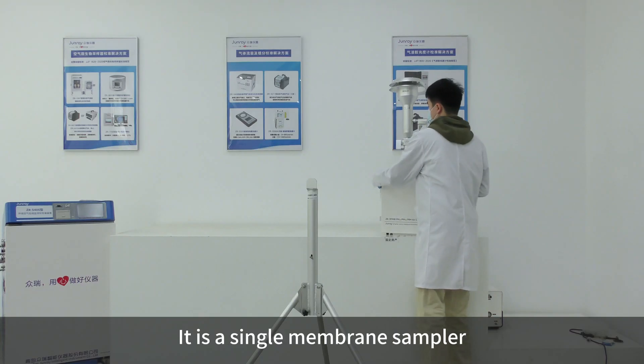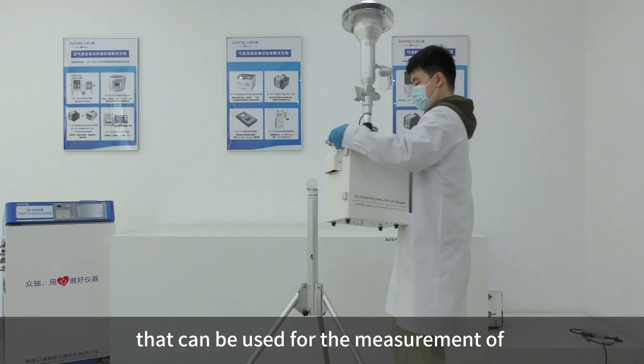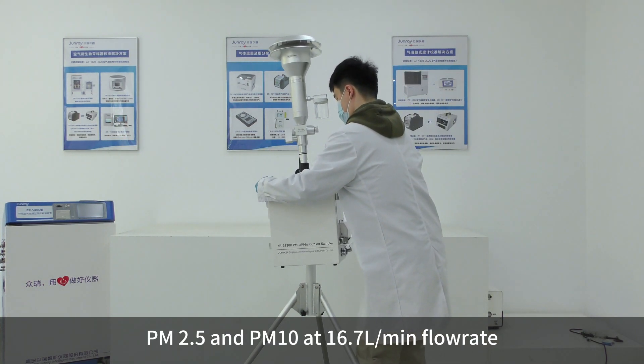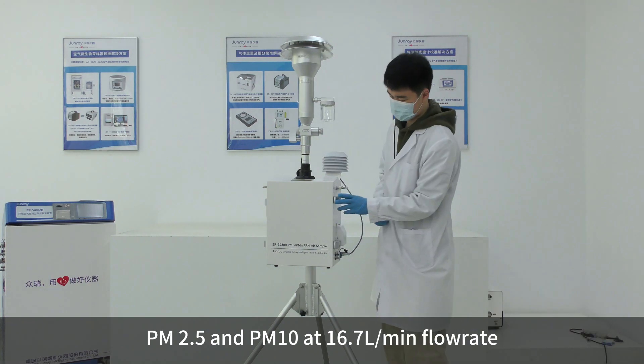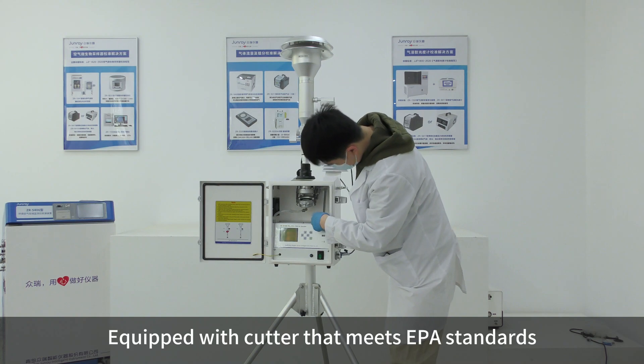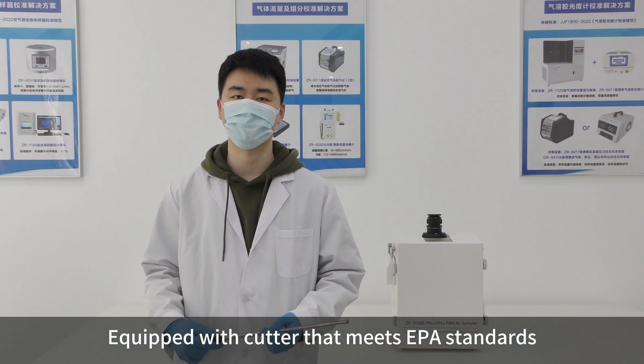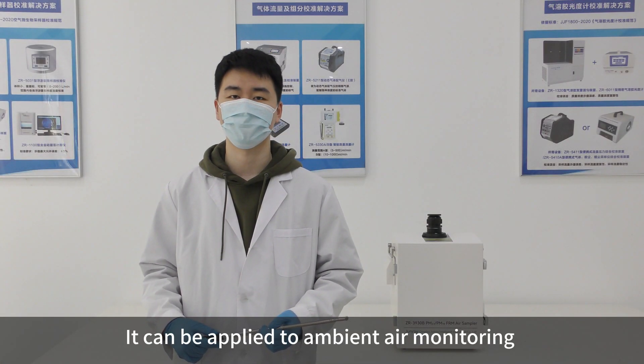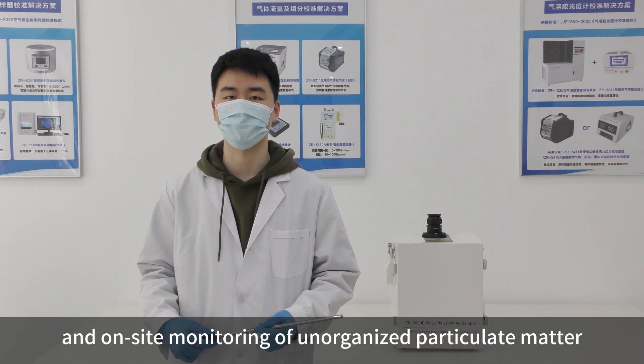It is a single membrane sampler that can be used for the measurement of PM 2.5 and PM 10 at 16.7 L per minute flow rate. Equipped with a cutter that meets EPA standards, it can be applied to ambient air monitoring and on-site monitoring of unorganized particulate matter.